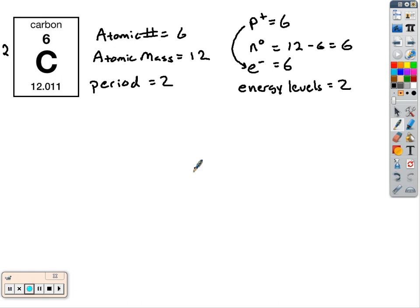We start off with a nucleus. Just draw a circle. Tell me how many protons and neutrons you have. You don't have to draw them in. You just have to write P plus equals and N zero equals, so we know how many are supposed to be there.